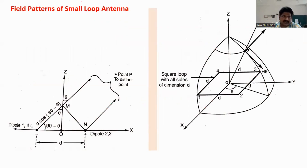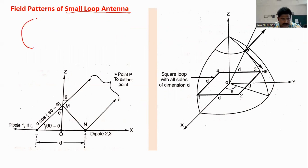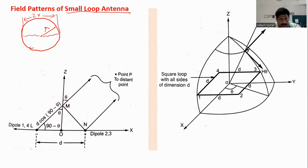Let us look at the field pattern for a small loop. We are taking a small circular loop having a radius r. The circumference is 2πr. Here r is very, very less than the wavelength, which is why we call it a small loop. The area of this loop is πr².